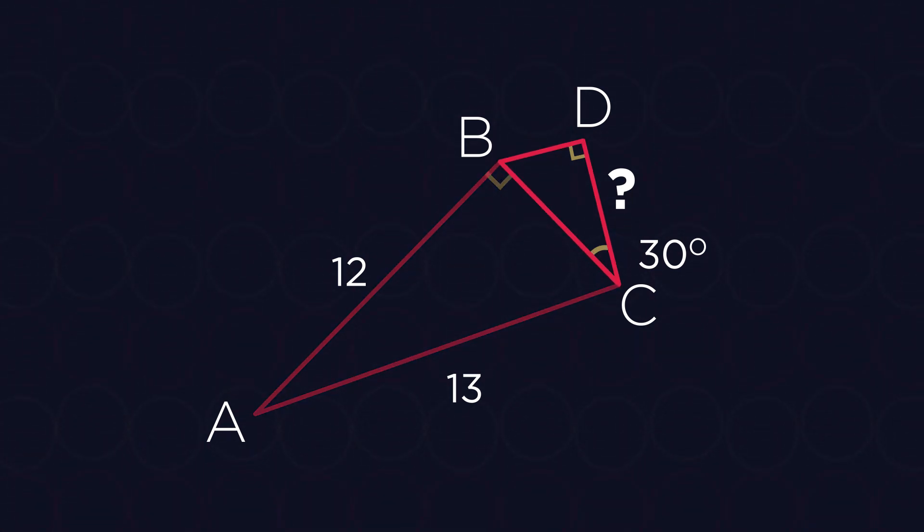We already know all the angles, so we need to find one side, and after that we'll be able to use SOHCAHTOA ratios to find the other sides.